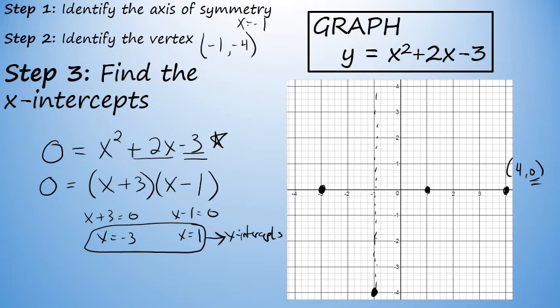This makes sense because x-intercepts must be the same distance from the axis of symmetry. If two x-intercepts are not equidistant from the axis of symmetry, something is wrong — either the x-intercepts or the axis of symmetry was calculated incorrectly.